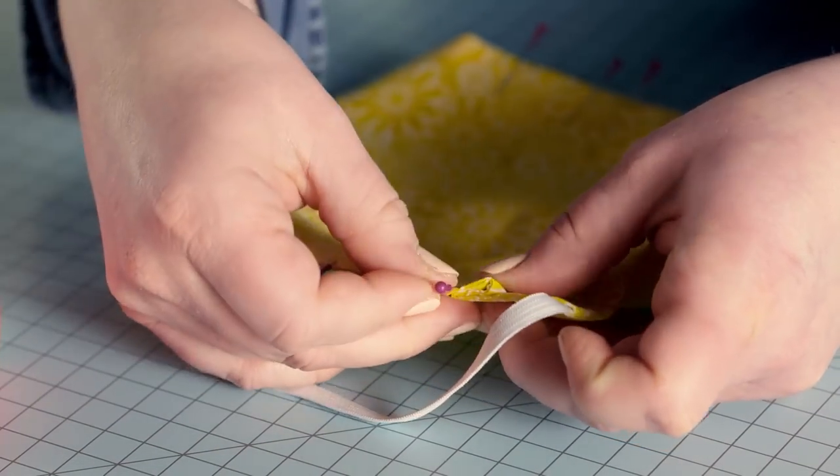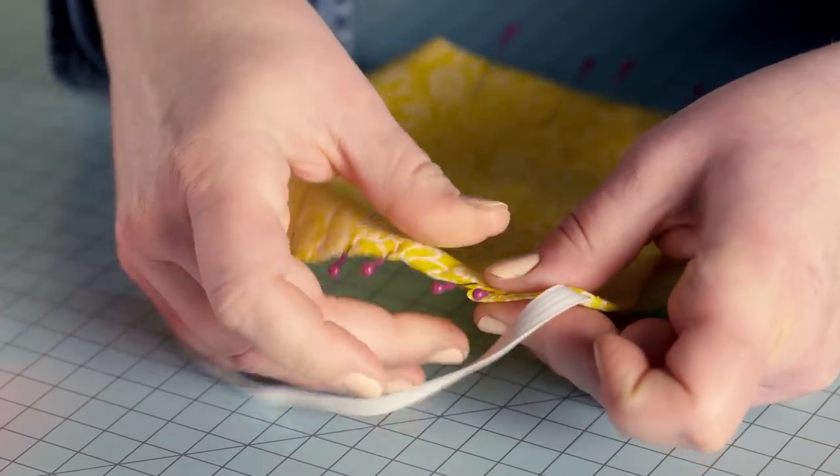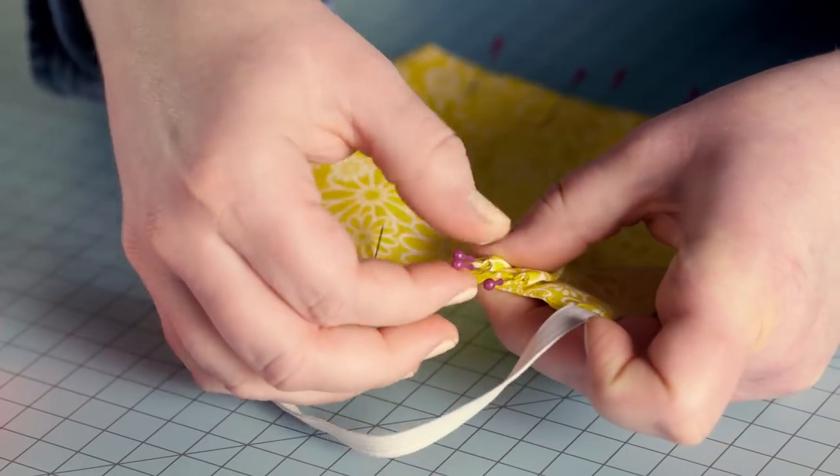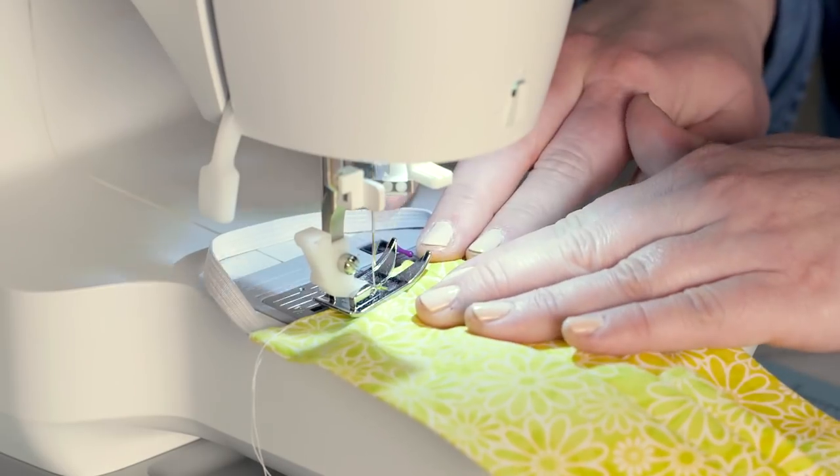When your pins are in place, fold the fabric, lining up the pins, secure with extra if needed, and sew along the edge. Continue doing that on each side of the mask and it's ready to go.